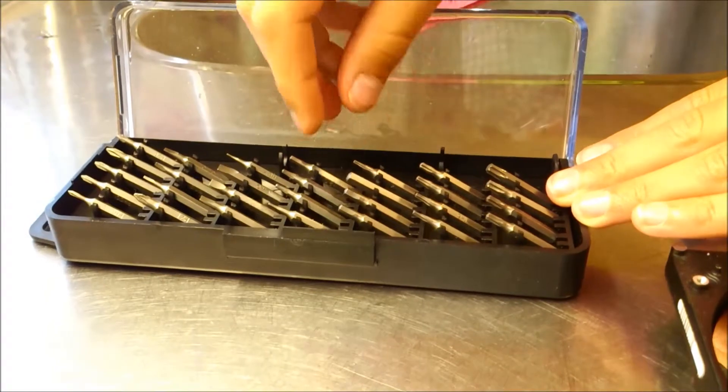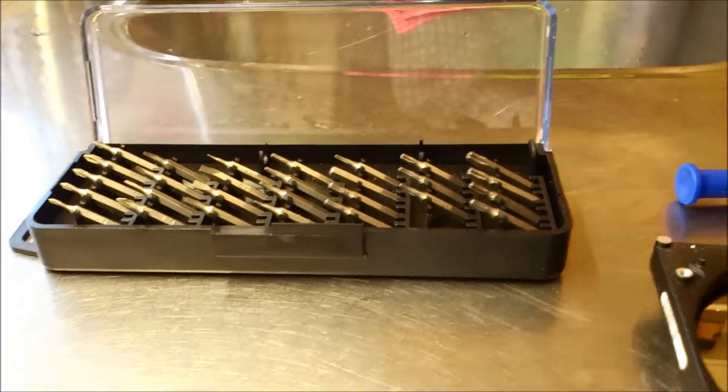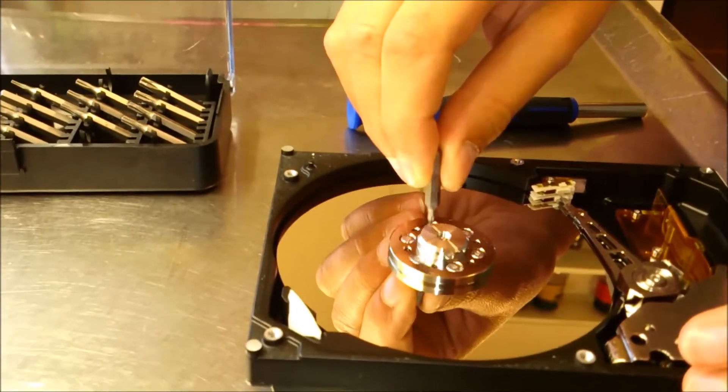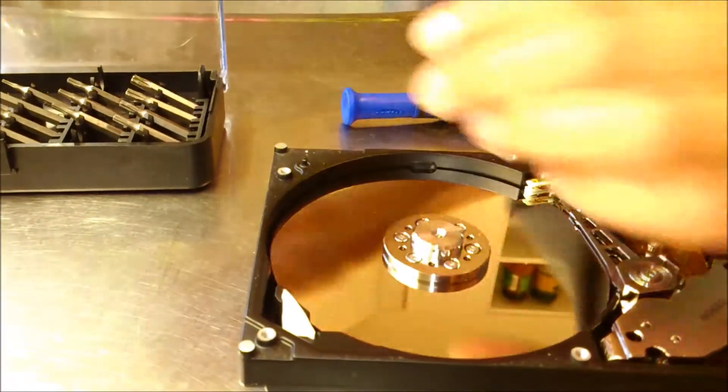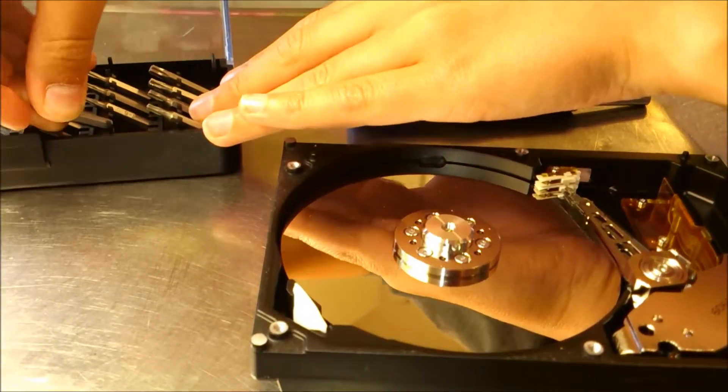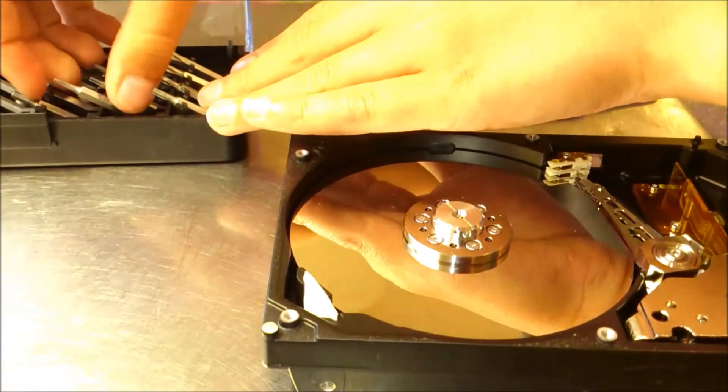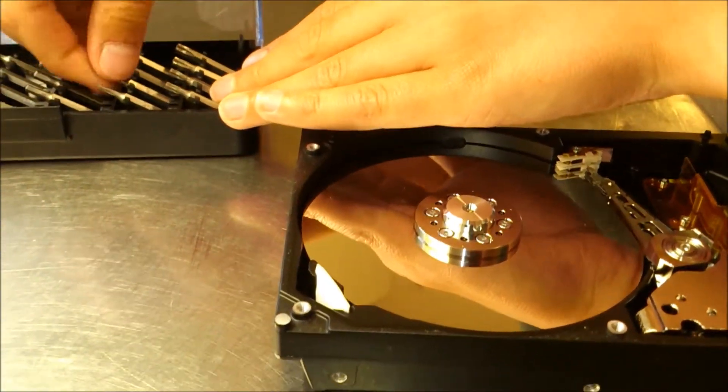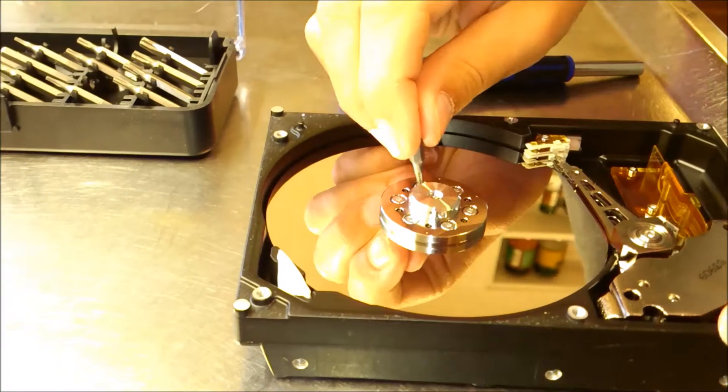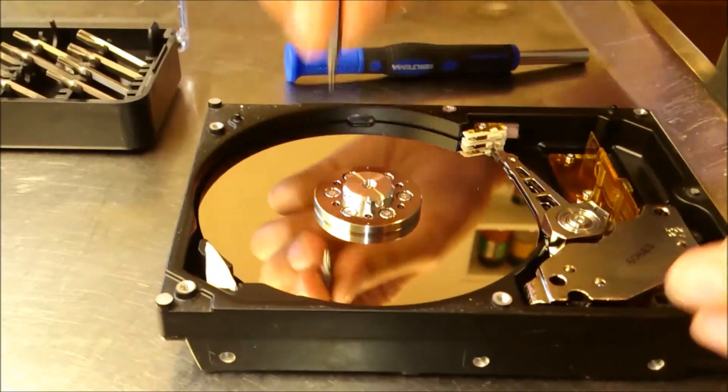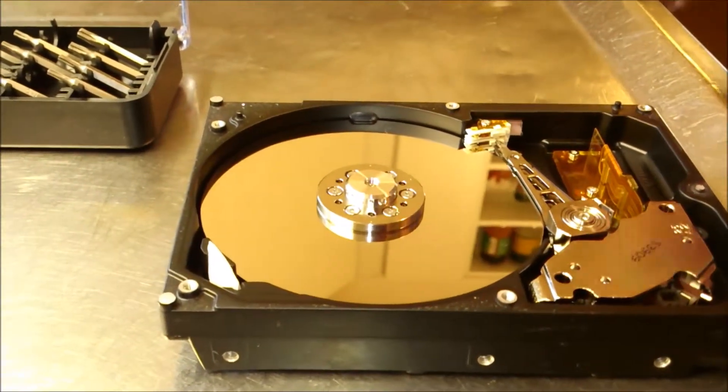But first, let me take a selfie. Switch out the T8 Torx key to a smaller one. I think this should do it. This is a T5. Is that too small? It's too small. Probably a T6 I will want to use then. So, first for the chassis is a T8 and then on the inside is a T6.